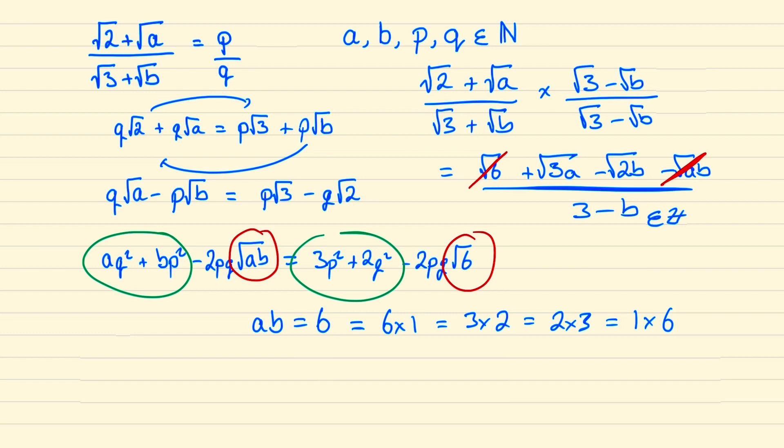And so checking our first case this will be when it's root 18 minus root 2 which is irrational so that doesn't work. In our second case we have root 9 minus root 4 which equals 1 so that does work.